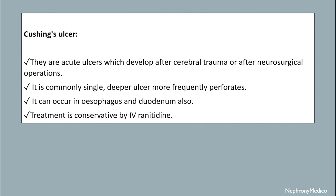Cushing ulcer: these are acute ulcers which develop after cerebral trauma or after neurological or neurosurgical operations. It is commonly a single, deeper ulcer that more frequently perforates. It can occur in the esophagus and duodenum also.